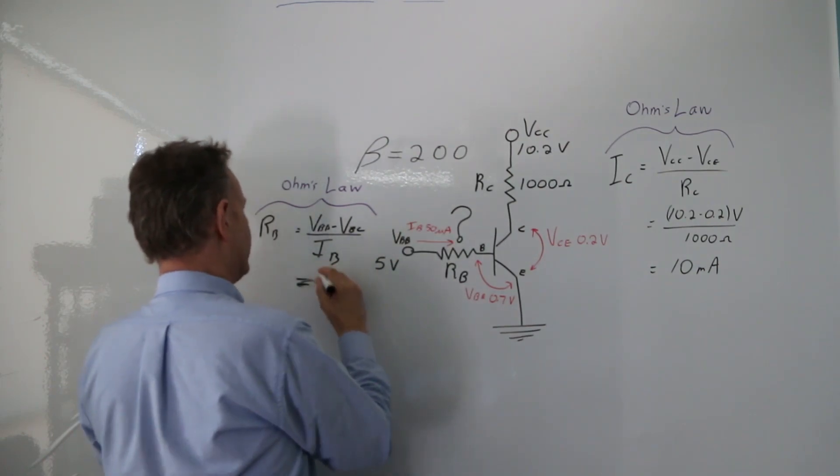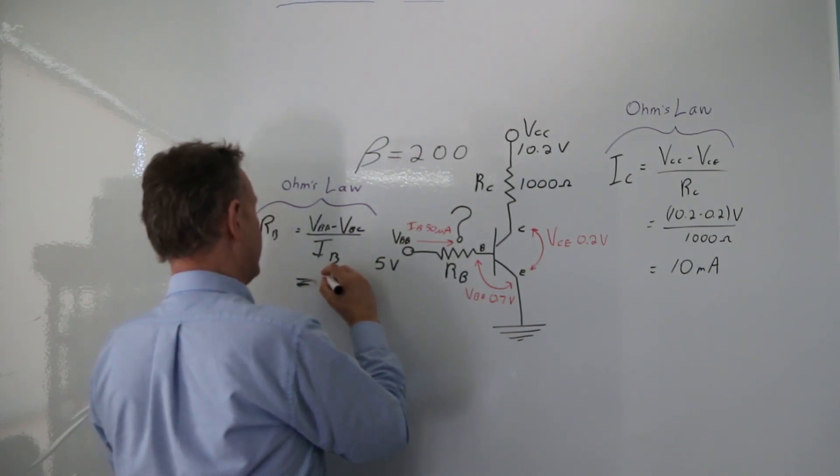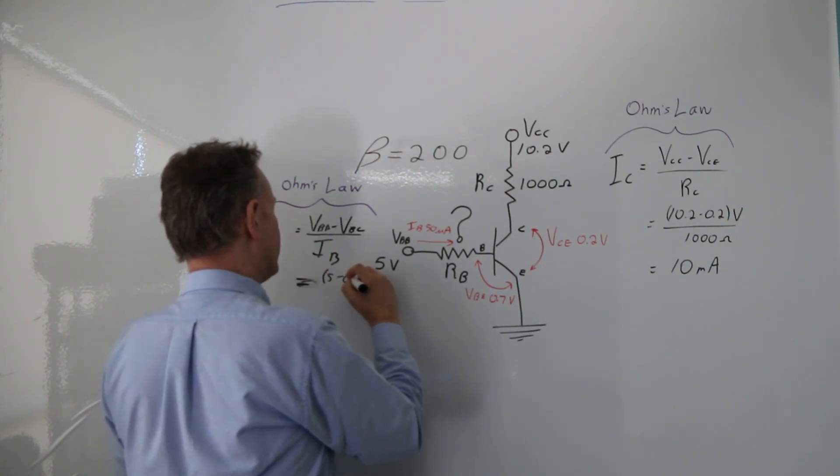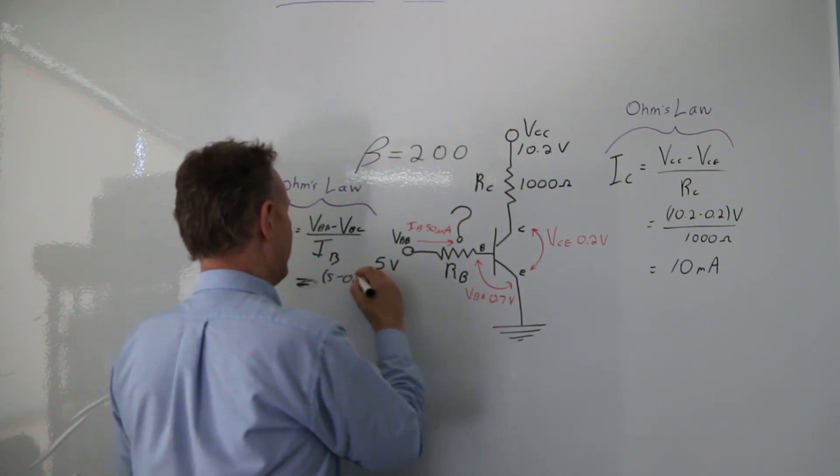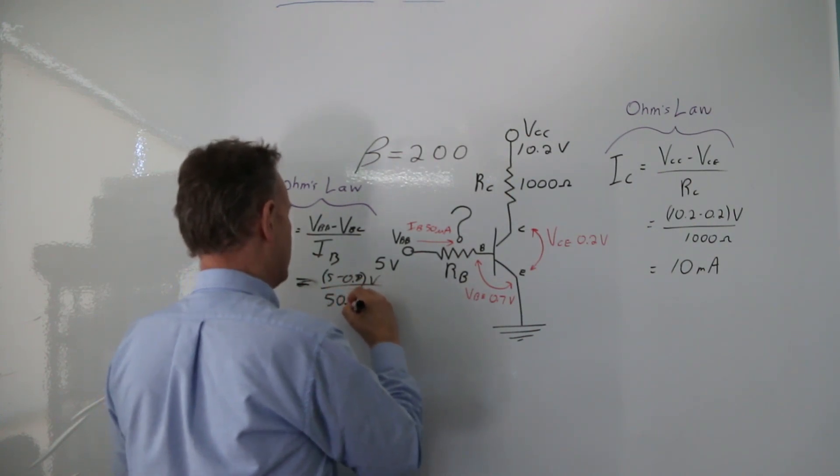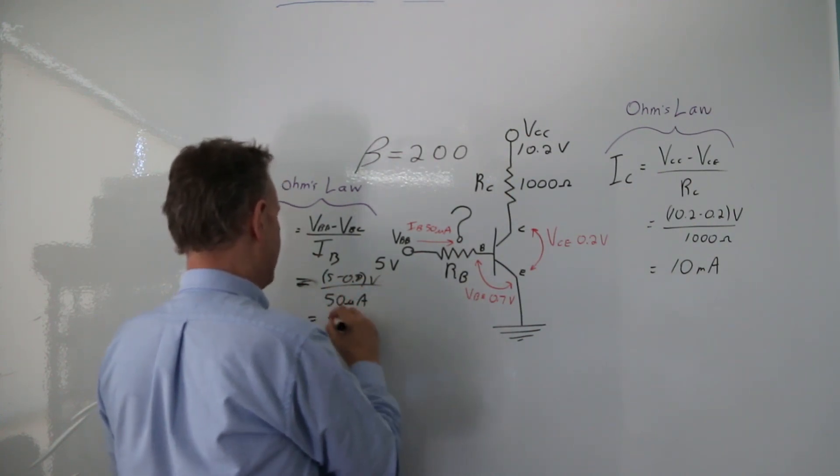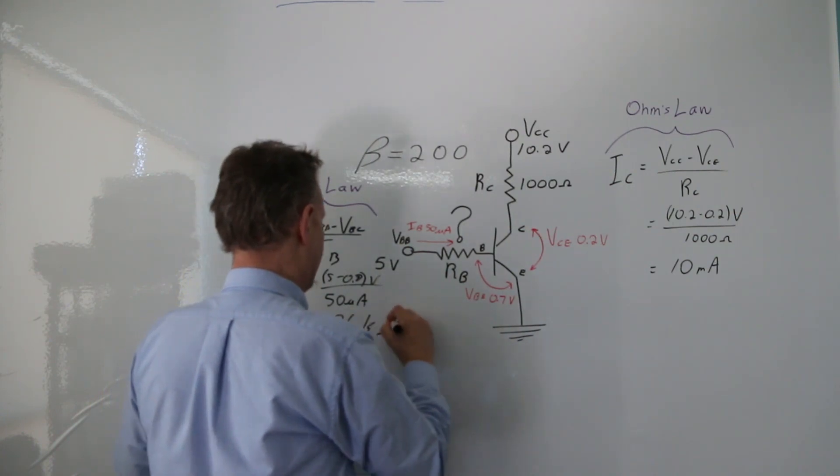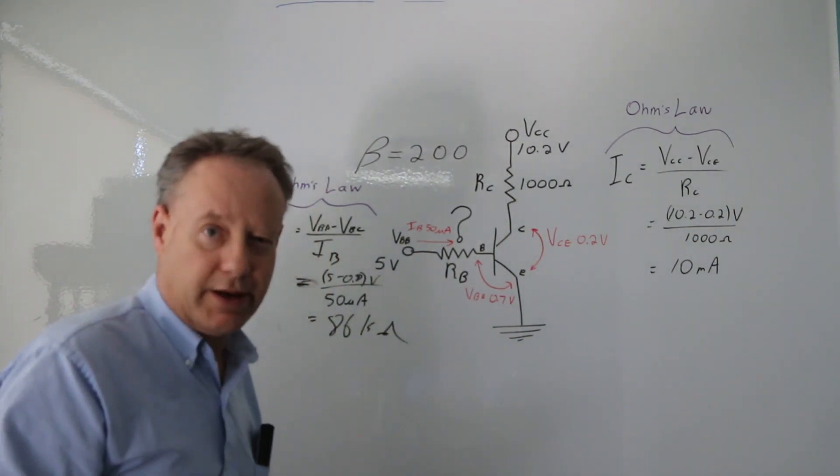So I'm just going to write down here 5 minus 0.7 volts divided by 50 microamps, and I think that's 86 kilo-ohms.